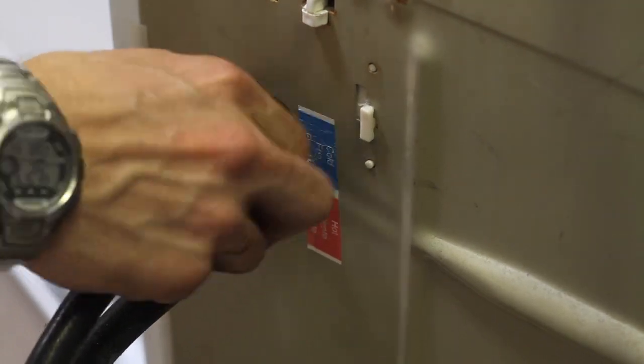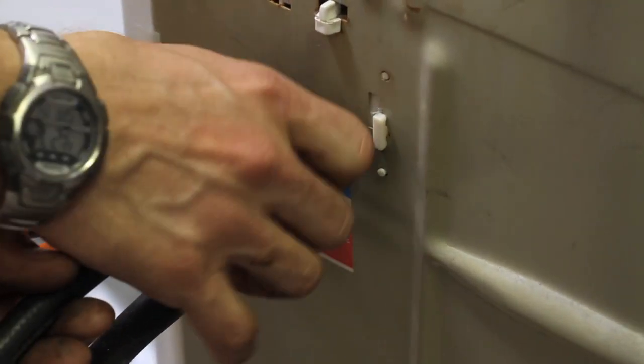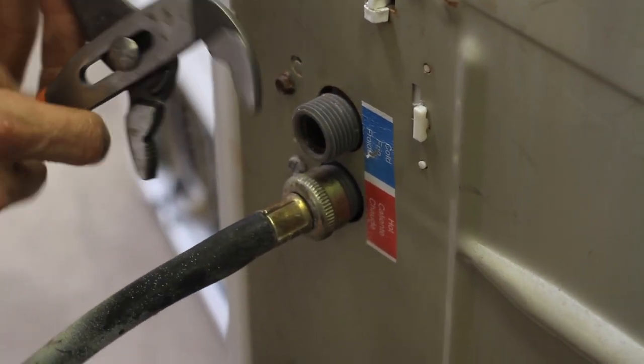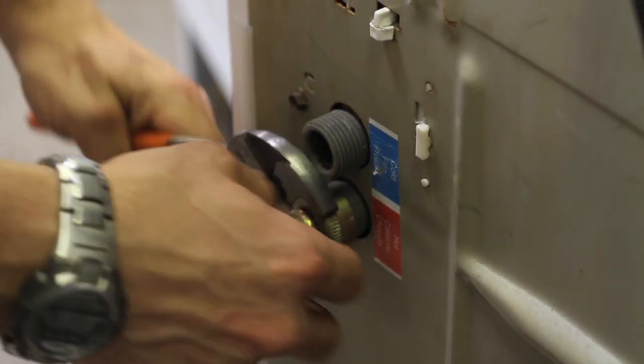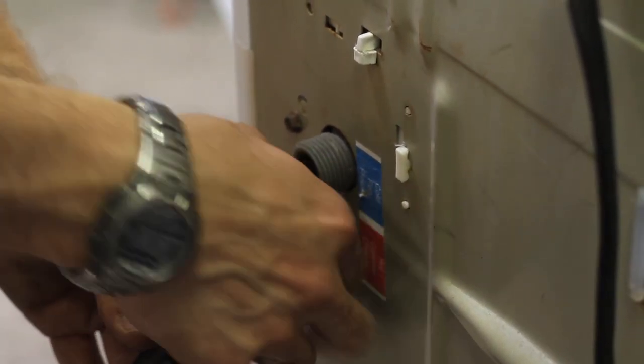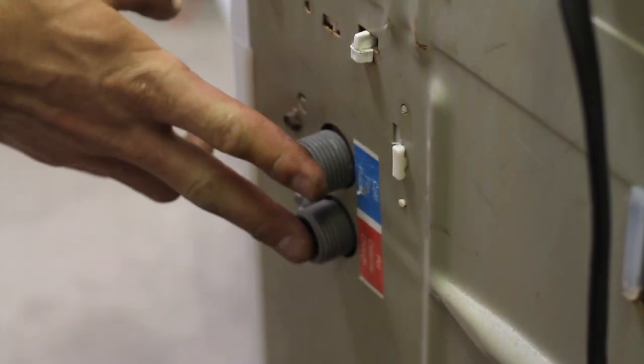Go ahead and remove your hoses, both hot and cold water hoses. Once you get the hoses removed, then you'll be able to see the filters inside the water valve here.